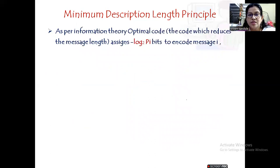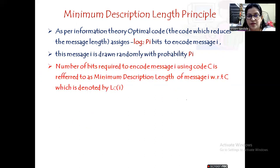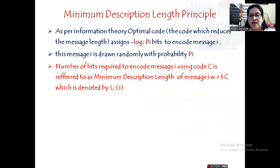The Minimum Description Length principle uses information theory, specifically log base 2 of (1/p_i) bits to encode a message i, where the message is drawn randomly with probability p_i. The number of bits required to encode message i using a code C is referred to as the minimum description length of message i, written as L_C(i), where L stands for length, C is the code used for encoding, and i is the message.